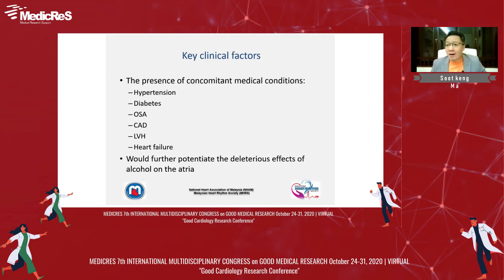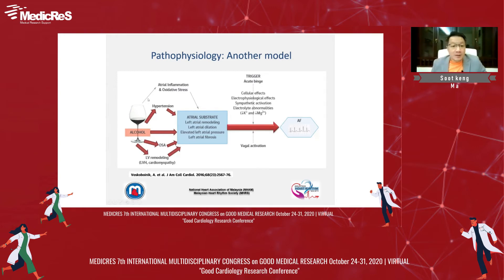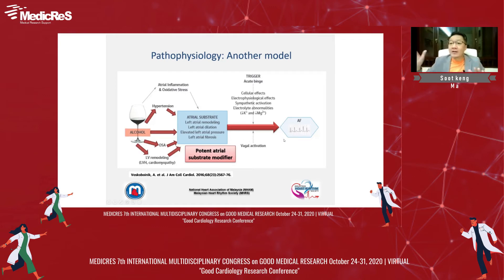You already score 99 marks in getting the bad results — please don't score another one mark and get 100. I like this model by Dr. Voskov Boynik, published about four years ago in JAC. His model speaks about what I call the cycle of violence: alcohol promotes hypertension, hypertension promotes more atrial substrate formation, and alcohol also promotes atrial substrate formation directly. Left ventricular hypertrophy does the same thing at the atrial level. They are all potent atrial substrate modifiers, which at the final end will manifest as atrial fibrillation or atrial tachyarrhythmias.